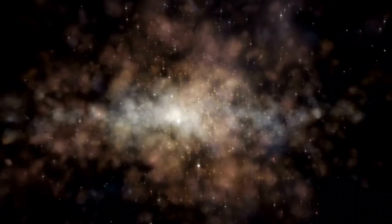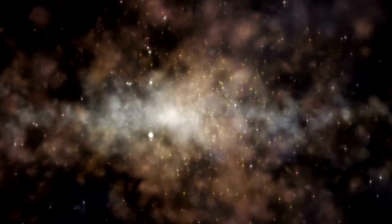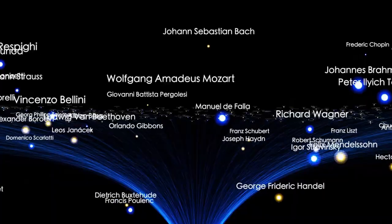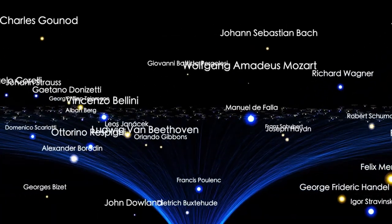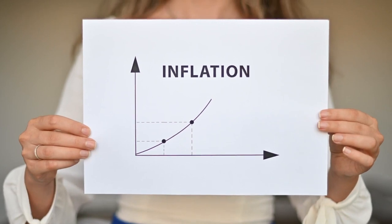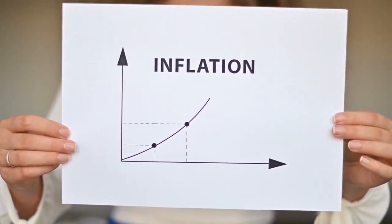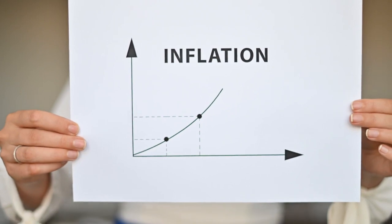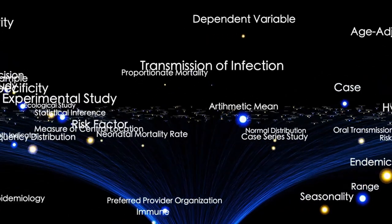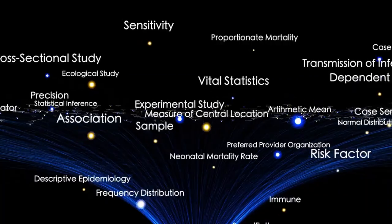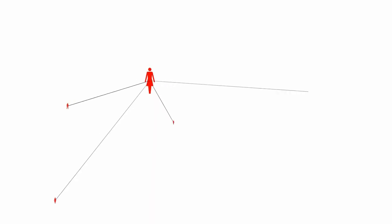One might wonder how the observable universe can be larger than the age of the universe in light years. The answer lies in the fact that the universe has been expanding ever since the Big Bang. Space itself is stretching, causing galaxies and other objects to move farther away from us over time. So the light we see today from very distant galaxies was actually emitted billions of years ago, and during that time, those objects have moved even farther away because of the ongoing expansion of the universe.